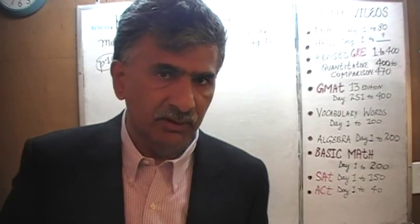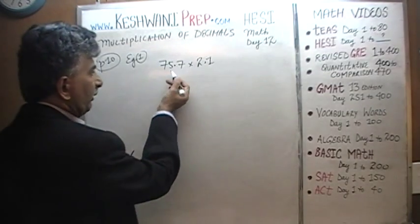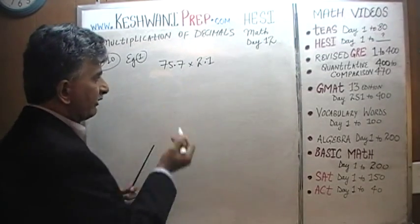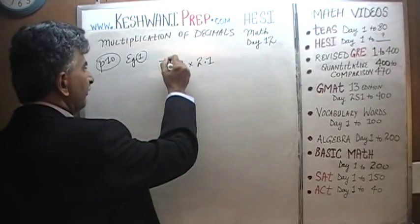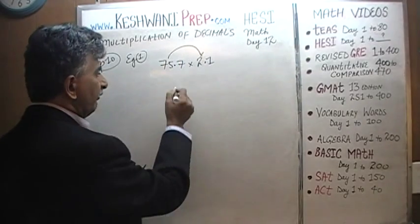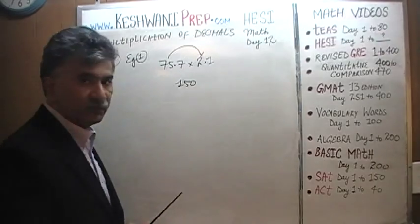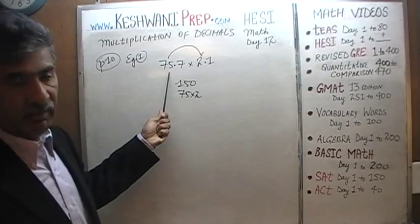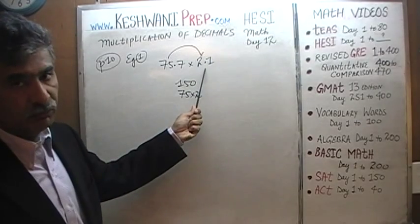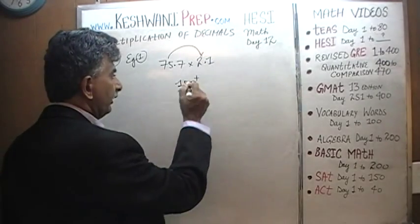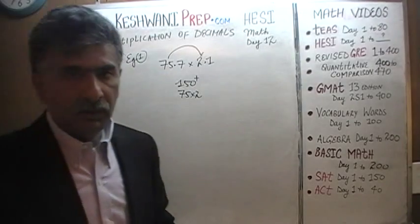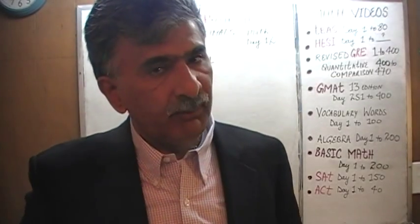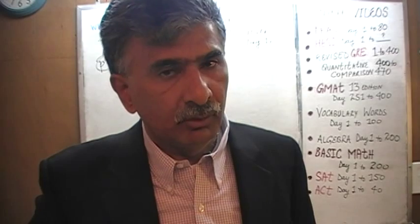What should be the answer approximately? Forget about 75.7 and the decimal parts. Look at simply 75 times 2, which is 150. Since we actually have 75.7 and 2.1, the correct answer is going to be slightly more than 150. If you happen to find just one answer choice that is slightly over 150, then you're done — you don't have to waste time doing it out.